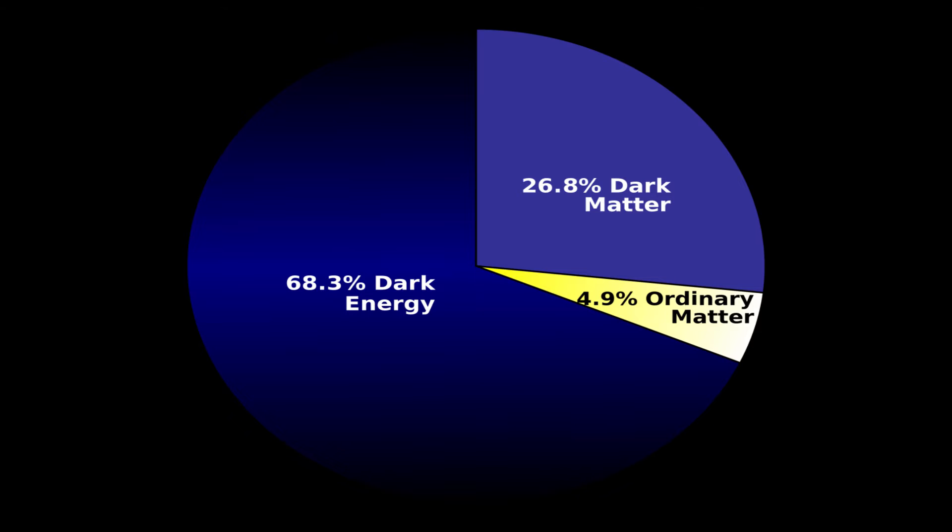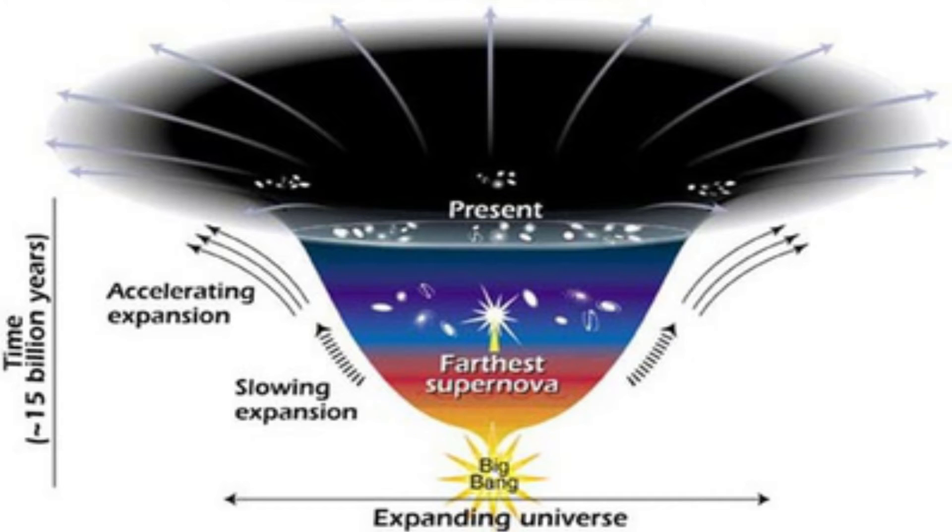It explains that roughly 68% of the universe is dark energy. Dark matter makes up about 27%. The rest, everything on Earth, everything we observe with all our instruments and normal matter, adds up to less than 5% of the universe.